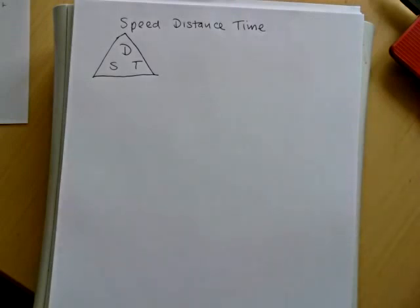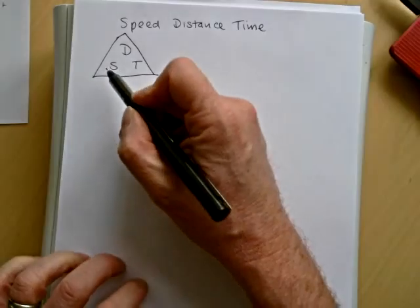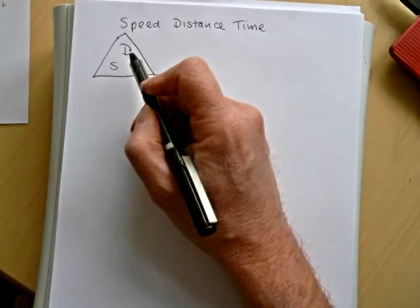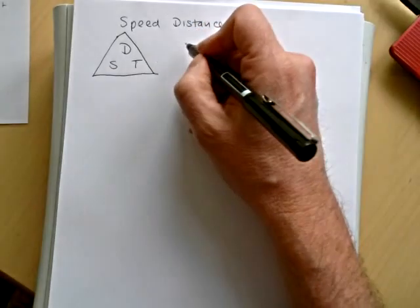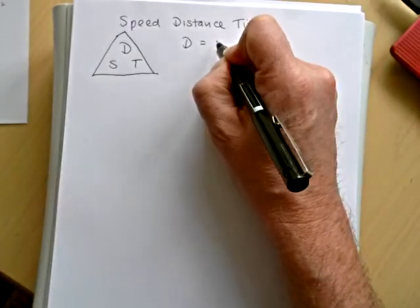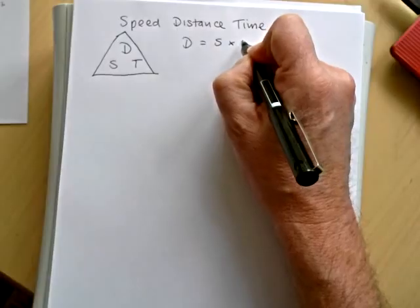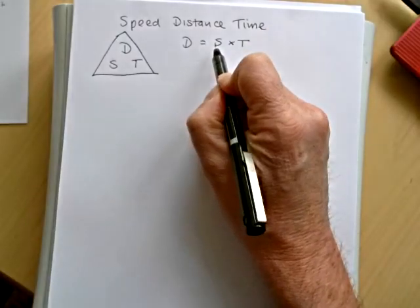In this short video I'm going to show you the rules used to calculate speed, distance and time. It helps to know this triangle with D at the top. Distance equals speed times time.